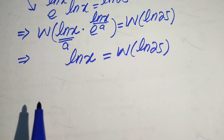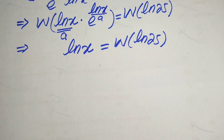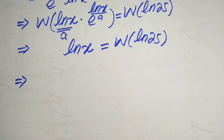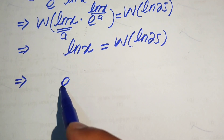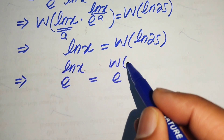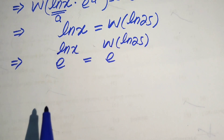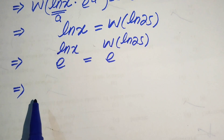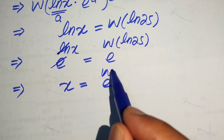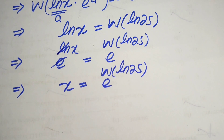Our target is to find the value of x, so we need to eliminate the log from the left-hand side. We take the anti-log (exponentiate both sides with base e), giving x equals e to the power of W(log 25). This is our final answer.